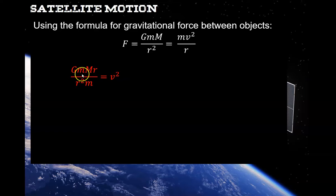I can clean up a lot of these things: mass cancels out, one of the radii cancels out. I end up with GM/r = v². So therefore, I can just take the square root of this.